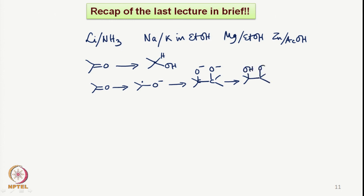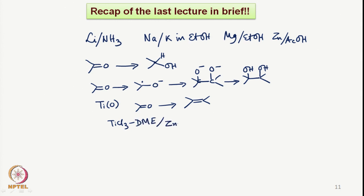We discussed in great detail how these reductions allow the thermodynamically more stable trans product in cyclic cases. We also saw that the reaction proceeds via a radical anion, and this radical anion can allow coupling to take place, forming the C–C bond easily, giving a di-anion which can lead to the formation of a 1,2-diol. We also saw that titanium(0) permits the coupling of carbonyl groups to form the corresponding olefin in one go.